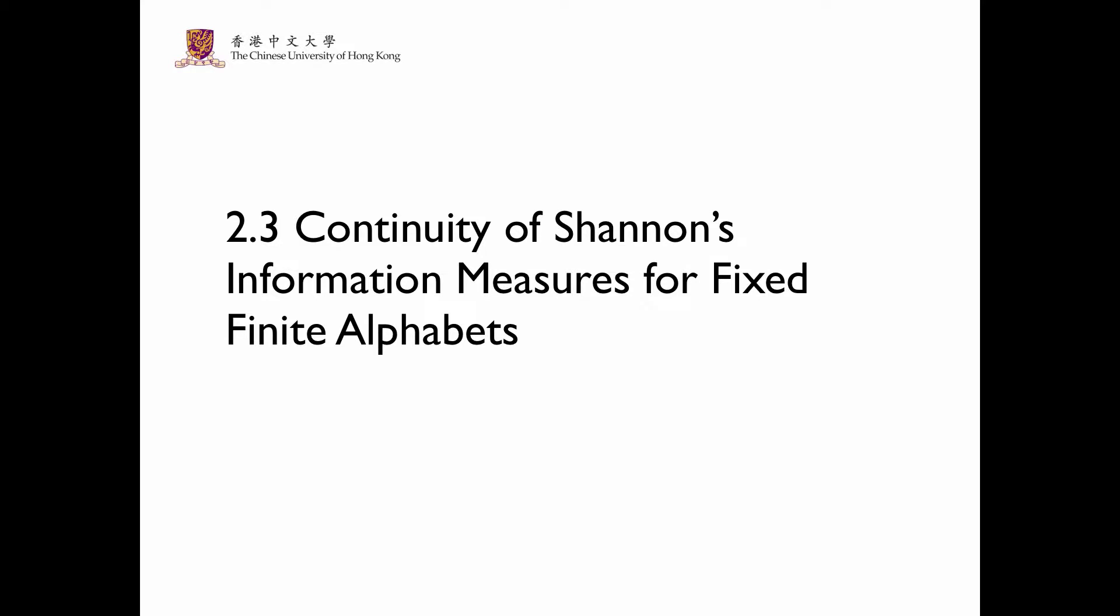Section 2.3 is about the continuity of Shannon's information measures for fixed finite alphabets. This topic is actually beyond the scope of this course. However, we can nevertheless develop some appreciation for the issues involved.